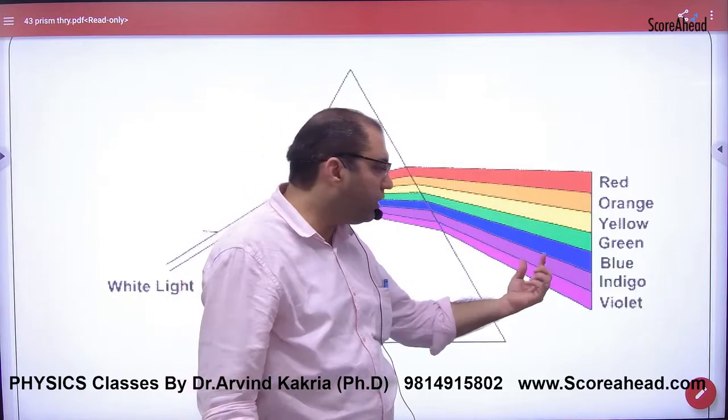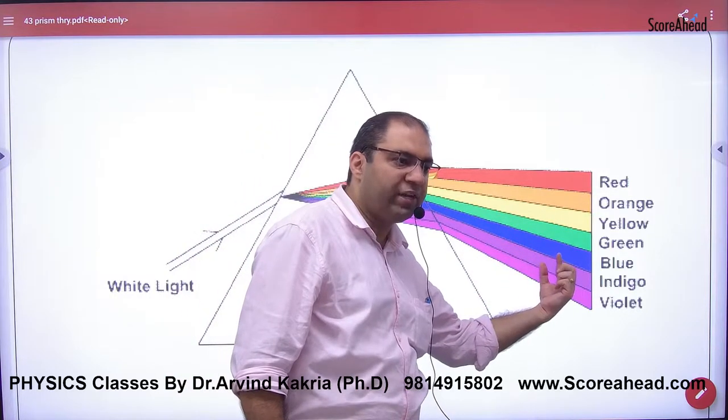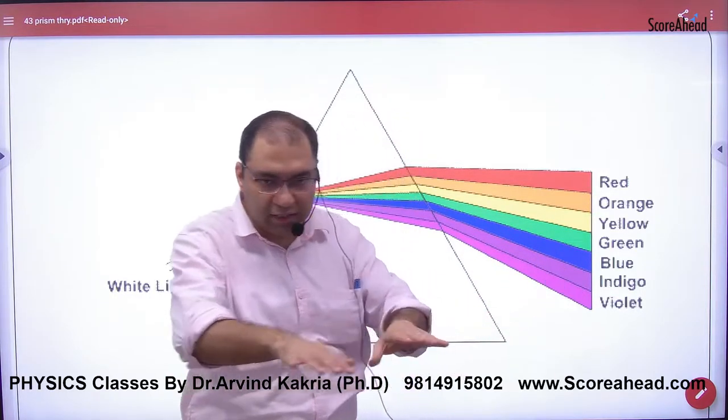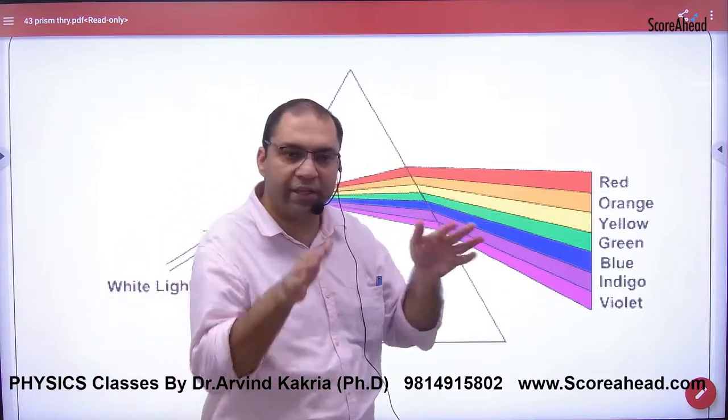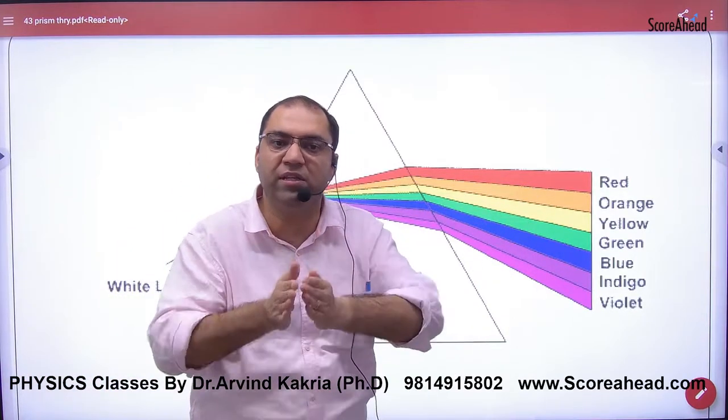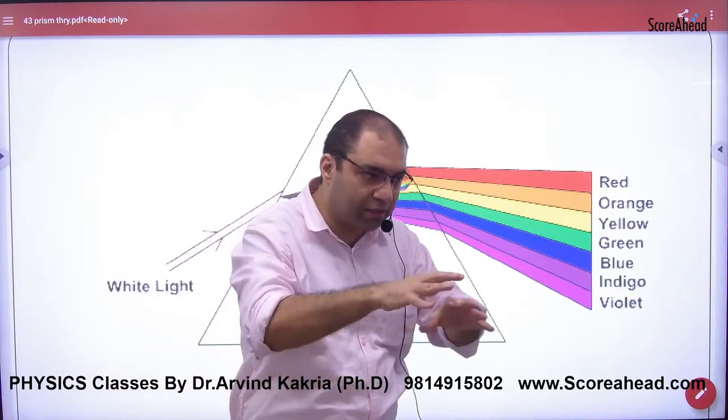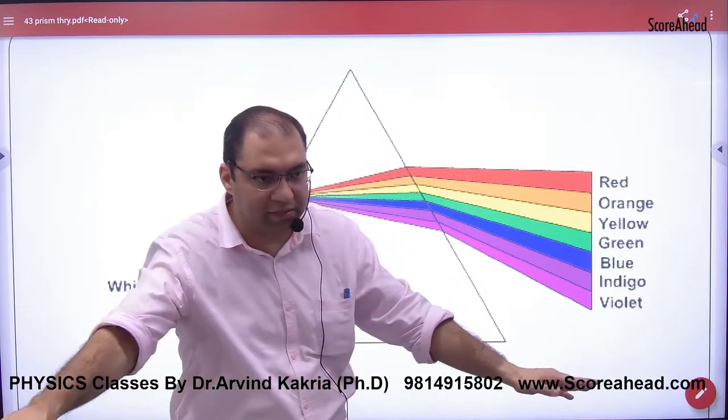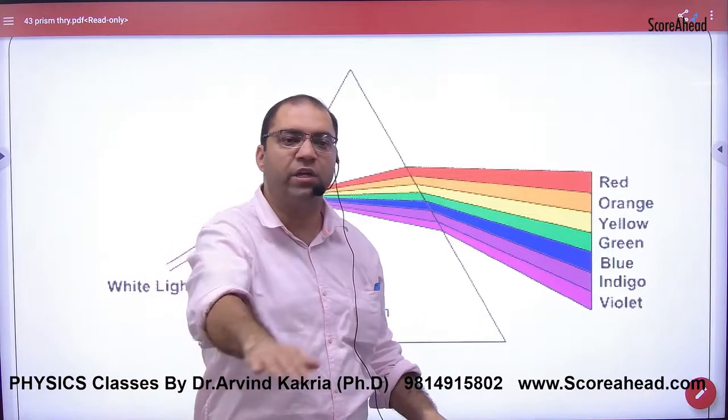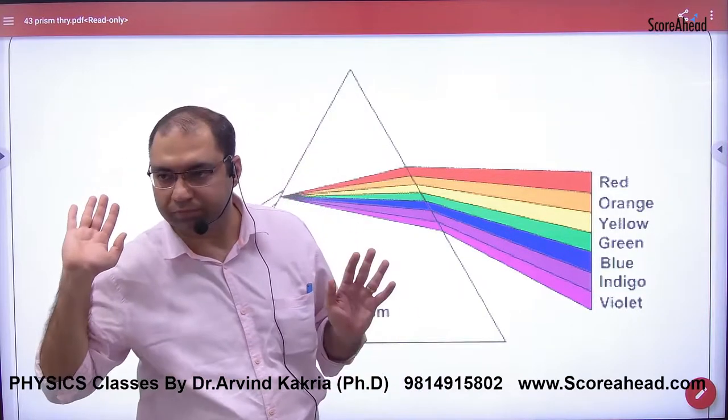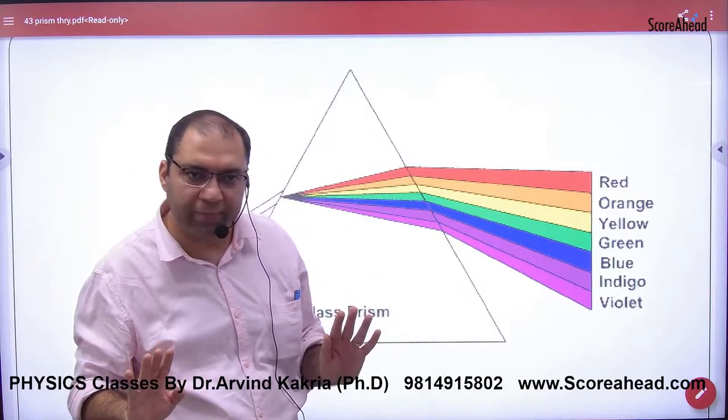So these smaller wavelengths scatter more, while the other colors remain in between because they don't scatter much and travel straight. So these colors will dominate and scatter more, and the color you will see in the sky is blue. So point number one is clear.